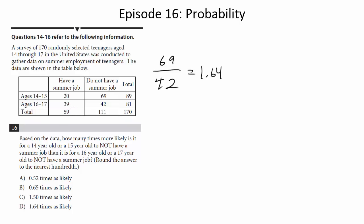Because the issue here is you have to compare the percentages. You have to compare, essentially, the probability that a 14- to 15-year-old has a summer job and a 16- to 17-year-old has a summer job. Because if you notice, the number of students that we've sampled, the number of kids that we've sampled, is different for each of these classes.